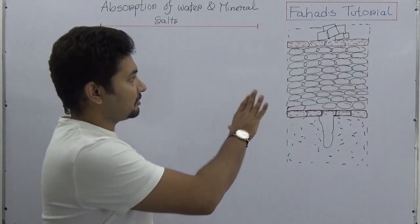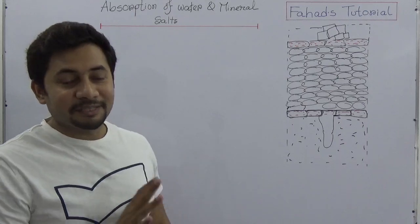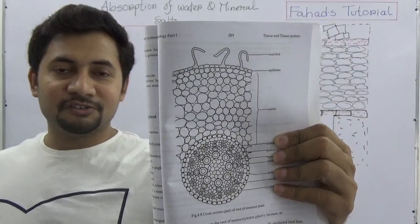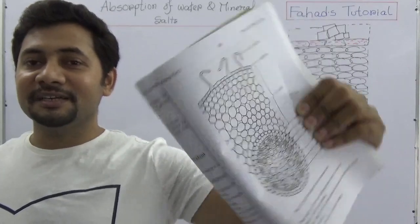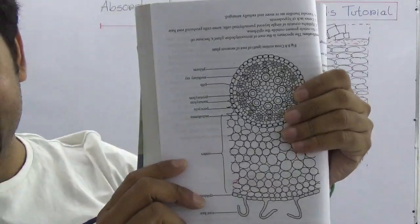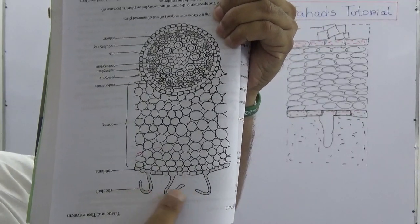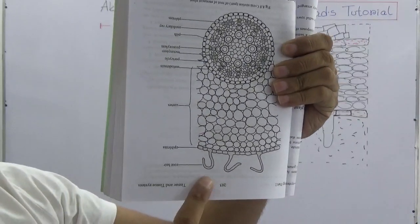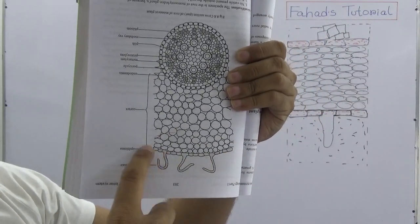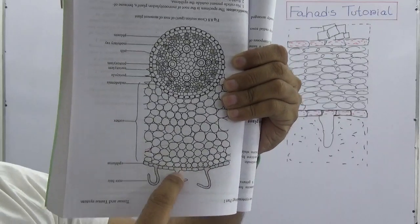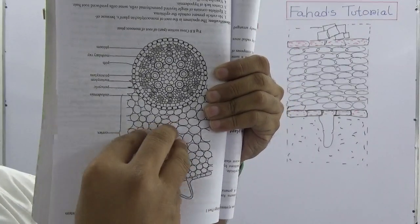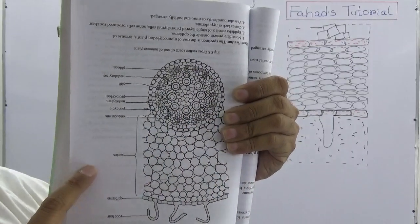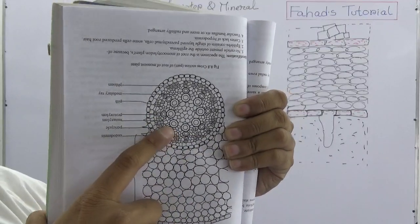Think about this picture — it's a cross-section of a root from a monocot plant, taken from the textbook. This is the root, and the first layer is known as epiblema, or you can say epidermis. The circular gathering of cells is known as cortex. Then there is another circular layer known as pericycle, and inside the pericycle there is the vascular bundle containing xylem and phloem.